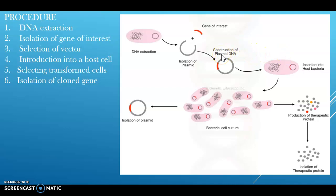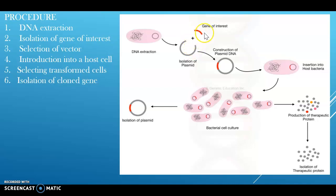There are various types of vectors available: plasmid DNA, BAC (bacteriophage-based vector), bacteriophage vector, MAC, and YAC — these are popular vector systems used in gene cloning. The vector must have some basic properties: it must be self-replicating, have a marker site to insert a marker gene, have a recognition site for restriction enzymes, have higher gene-carrying capacity, not interfere with host DNA replication, and replicate faster.